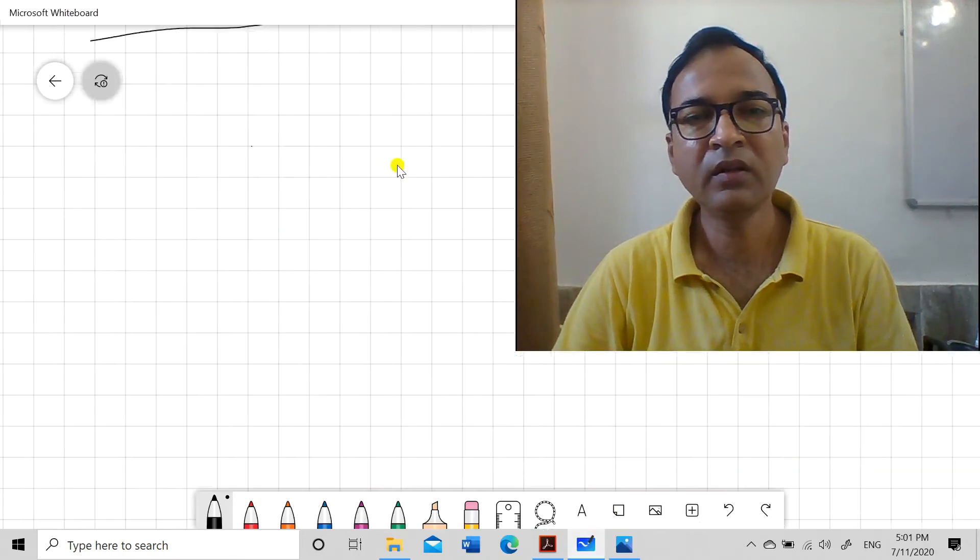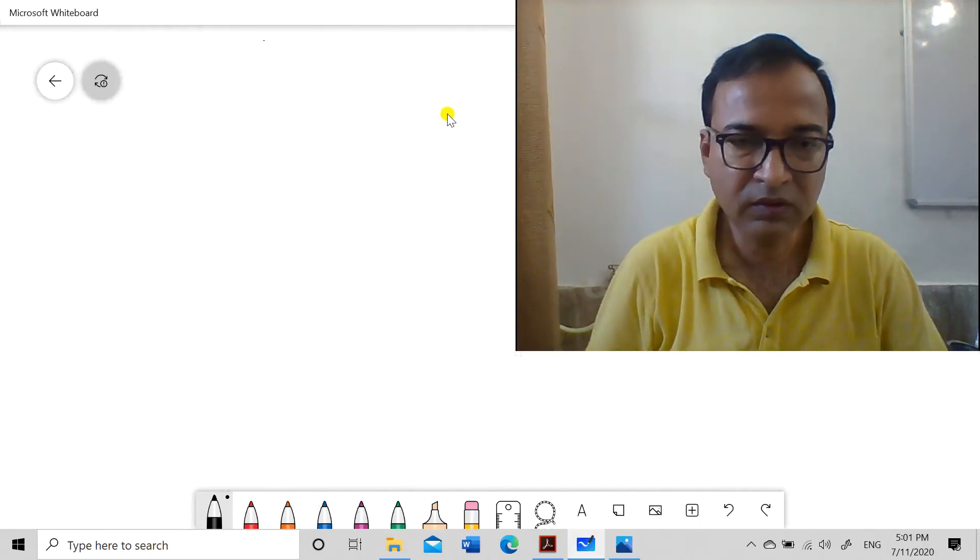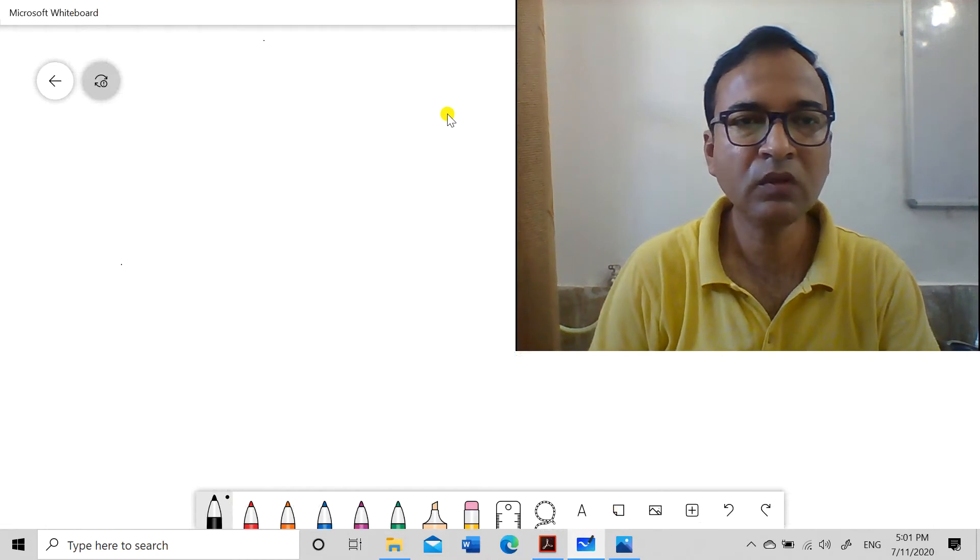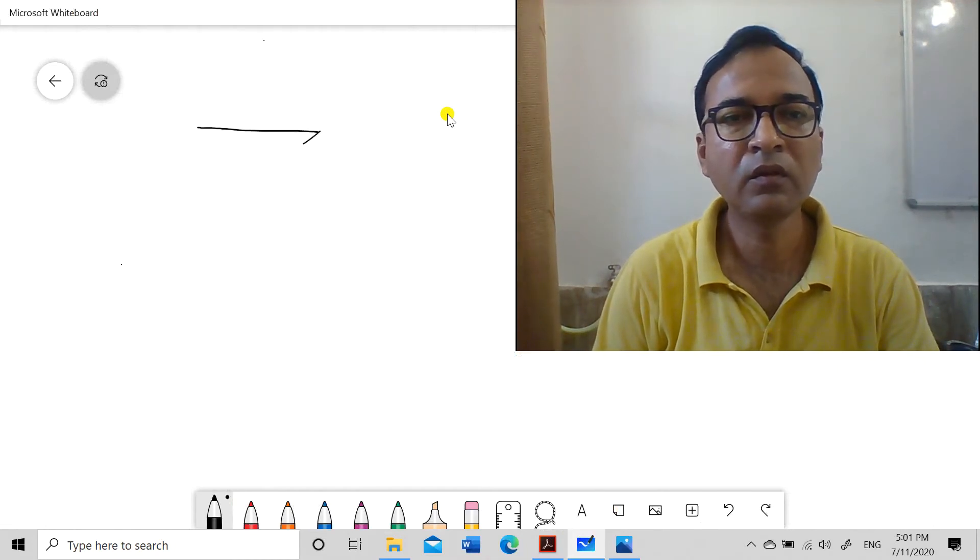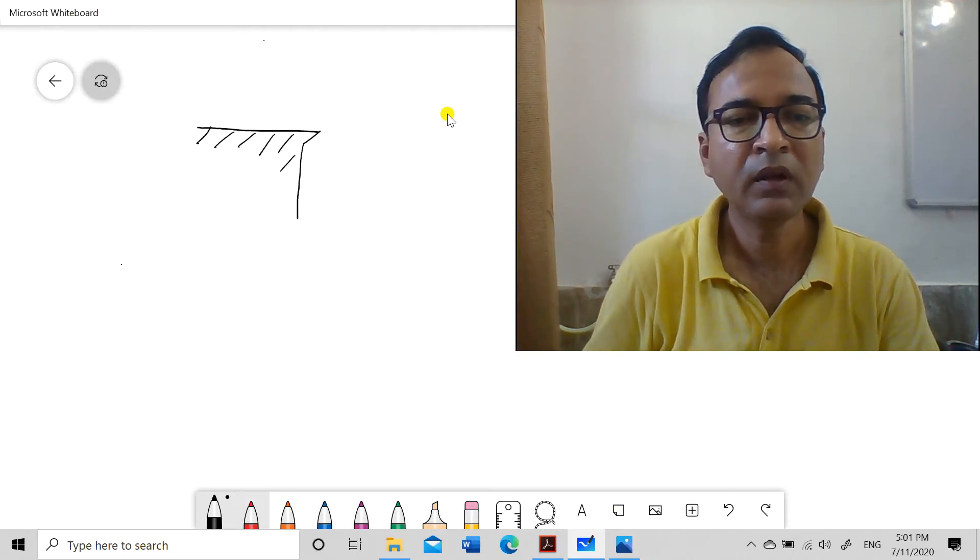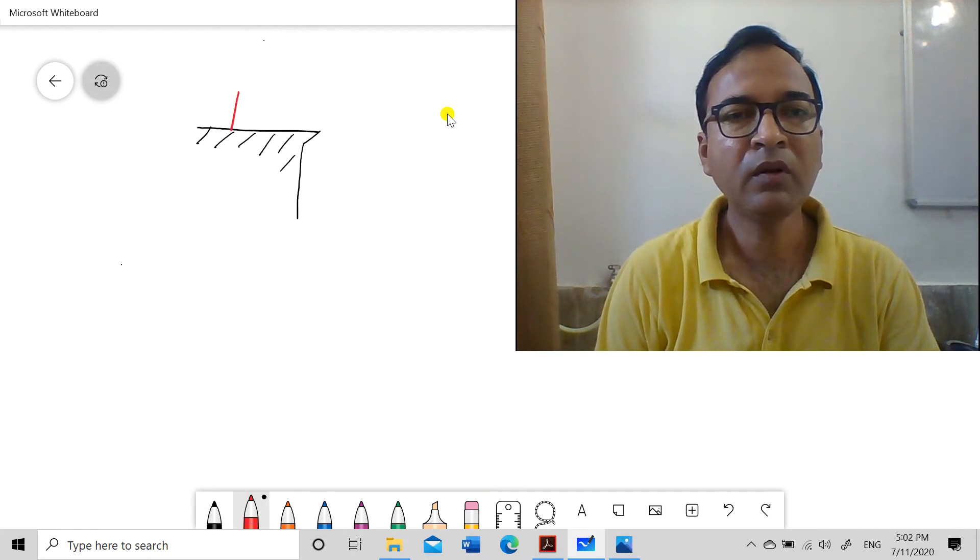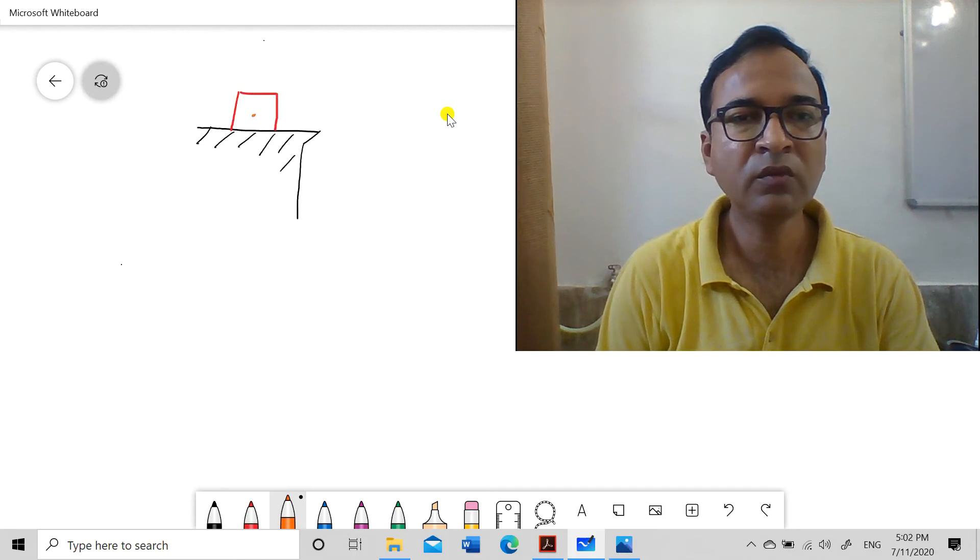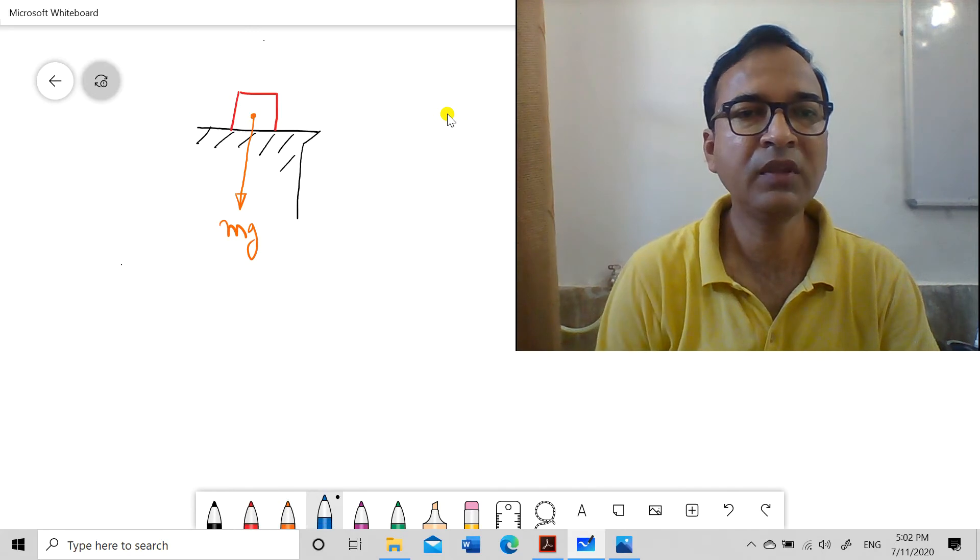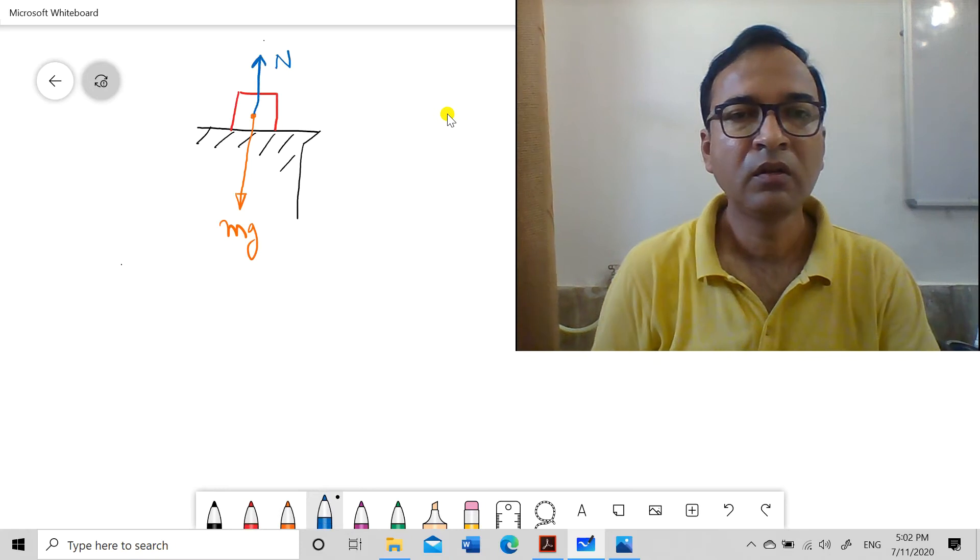The situation can be understood like this: suppose this is the surface of a table and an object is lying here with mass mg. Consider it a point object at the center of mass. Gravity mg is acting downward, and the normal reaction N is acting upward.